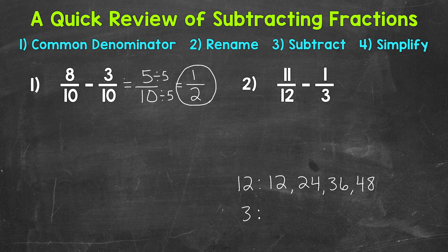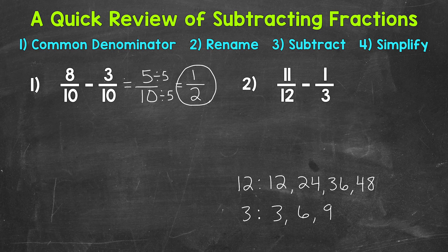Now let's do 4 multiples of 3 and see if we have any in common: 3, 6, 9, 12. And we have 12 in common, that's our least common multiple, so that's going to be our least common denominator.